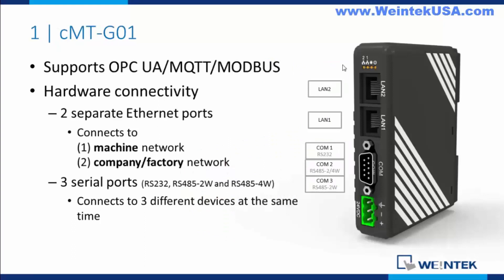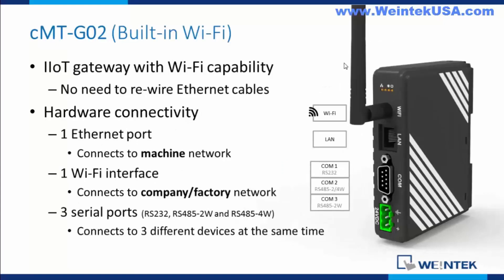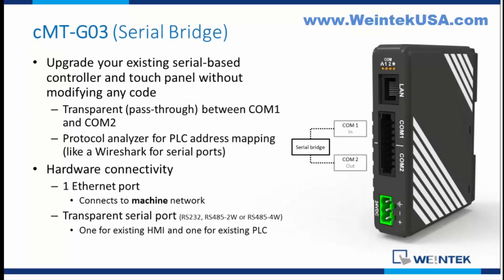The CMT G0-1 is our dual LAN plus serial gateway. LAN 1 and LAN 2 can be used to separate your networks — your machine network from the IT network. And of course a serial port can be configured for any serial protocol. The G0-2 is basically the same but with a Wi-Fi port instead.